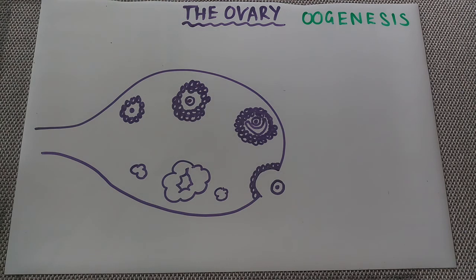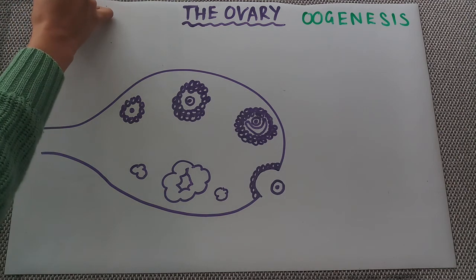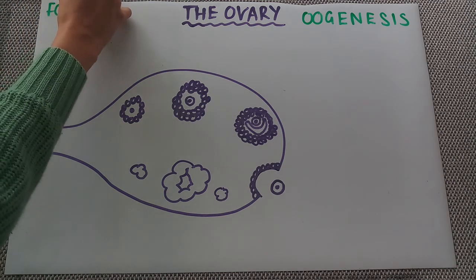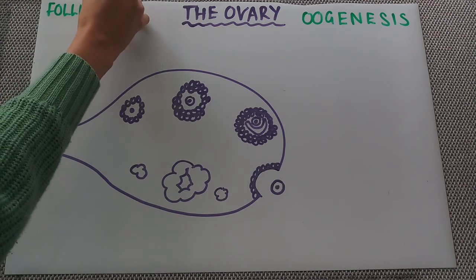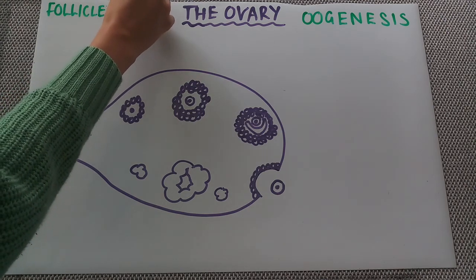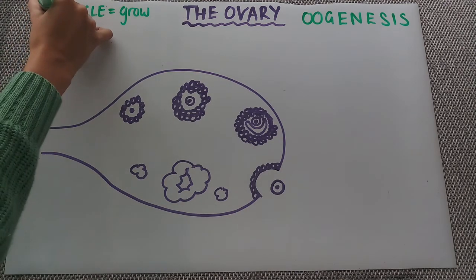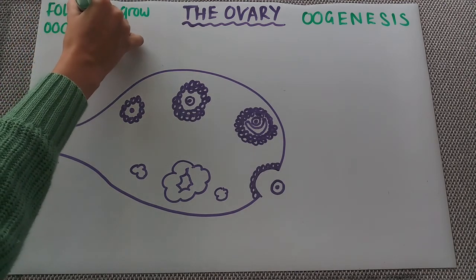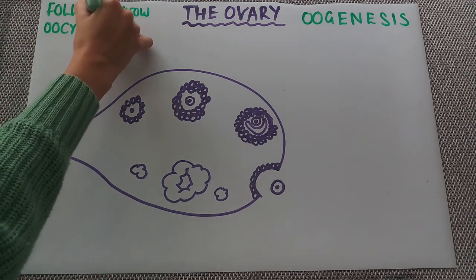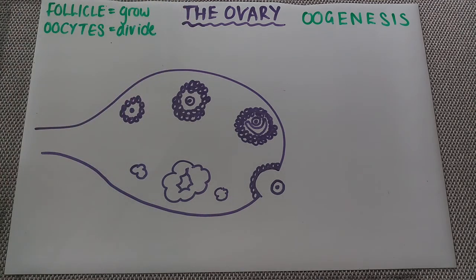Before we go through the process of oogenesis, in terms of the things we are looking at: firstly we'll be looking at follicles, and these grow. We will also be looking at oocytes, and when we talk about these we are talking about division, so they are divided.